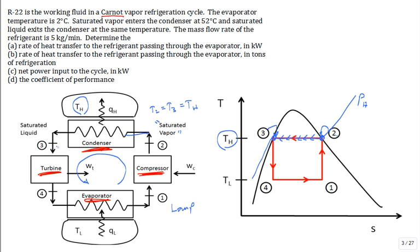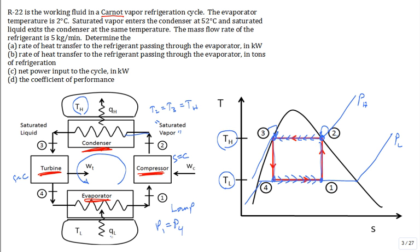On a temperature-entropy diagram, we plot two lines of constant pressure. State 2 is saturated vapor and state 3 is saturated liquid, both at high pressure P_H, so all heat transfer out of the working fluid in the condenser occurs at T_H. The turbine extracts work isentropically (S = constant), just like the ideal compressor. States go from 3 down to 4 and from 1 up to 2. The evaporator operates at constant low pressure P_L, and evaporation occurs at T_L. The Carnot cycle forms a rectangle tucked under the dome on the TS diagram.